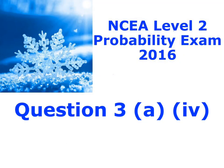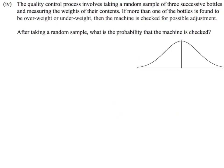Here is question 3a part 4. We have what we've got for this one. It's talking about taking a random sample of three successive bottles and measuring their weights. If more than one of the bottles is found to be over or underweight, they need to check the machine. They're asking us what's the probability of the machine needing to be checked.